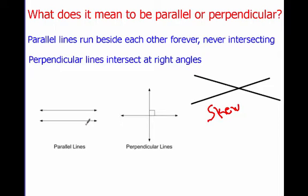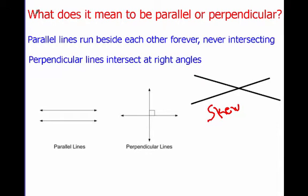So, parallel lines never touch, skew lines do touch one time but the angles are whatever they want to be, and perpendicular lines intersect at right angles. Those are the different types of intersecting lines that we can have.